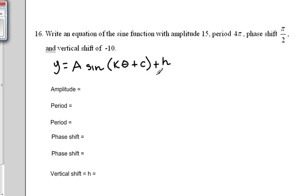Your answer must be in this form: y equals A sine parentheses k theta plus c close parentheses plus h. The four things we need in order to write the equation are A, k, c, and h.